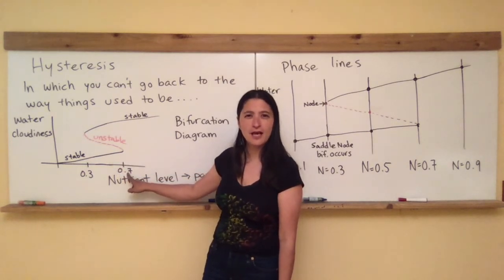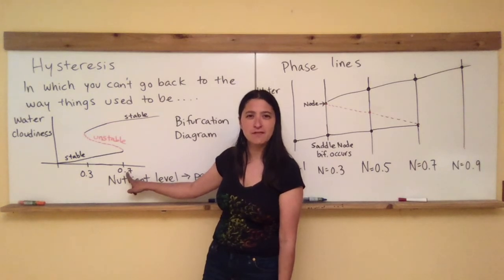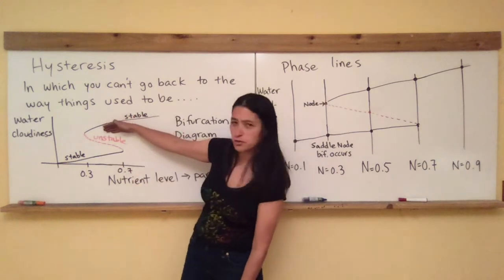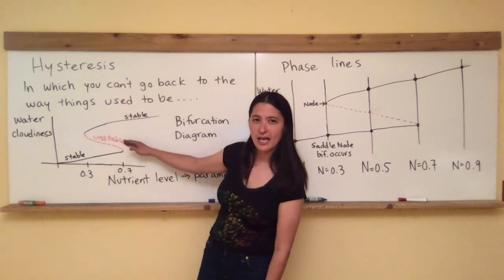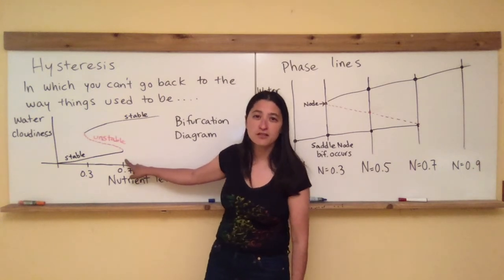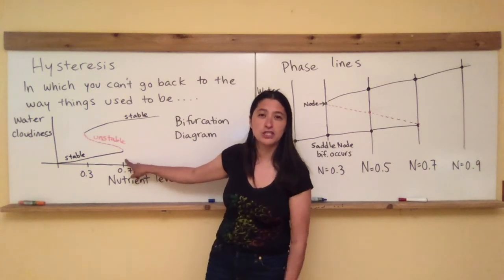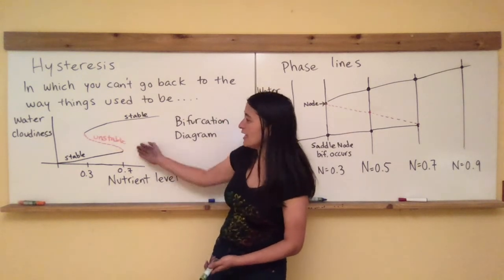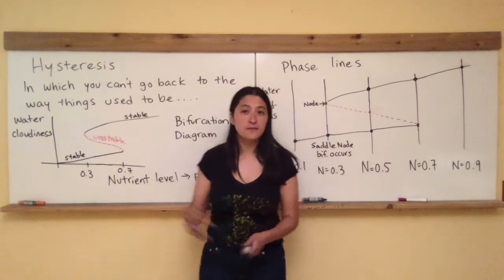All of a sudden at nutrient level 0.7, what happens to this stable equilibrium point? It starts to merge with this unstable branch. And then right here at nutrient level 0.7, another saddle node bifurcation occurs, kind of in the backwards direction, where we have these two things come together and then disappear.